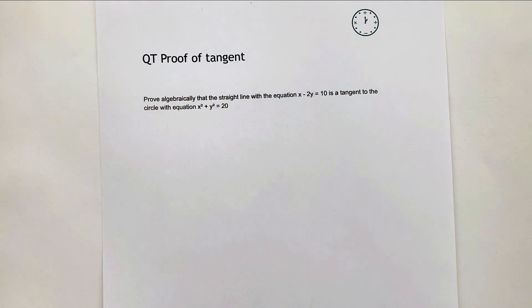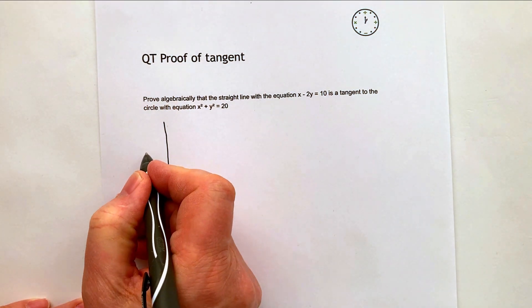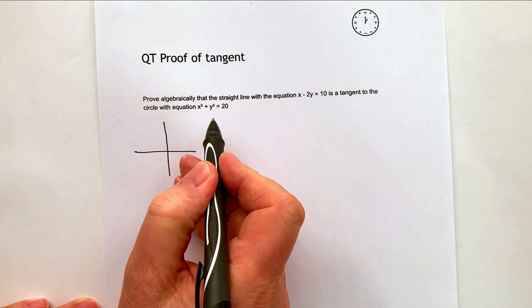In this particular video we're going to be looking at proof of tangent. It says prove algebraically that the straight line with the equation is a tangent to the circle with equation of that. So what we're basically getting at is that if we have a circle, and this is the equation of a circle.